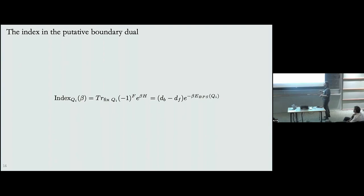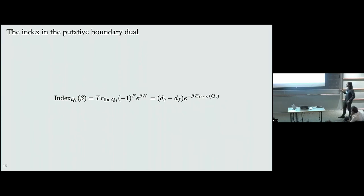As you all know, the supersymmetric index in a quantum mechanical system — let's say fixing all charges except one associated to angular momentum — takes this form at finite beta. In very simple systems it can be written as the difference between the degeneracy of bosonic BPS states minus the degeneracy of fermionic BPS states, times e^{-β E_BPS}. This is something basic: states that are not protected are not counted by this index.